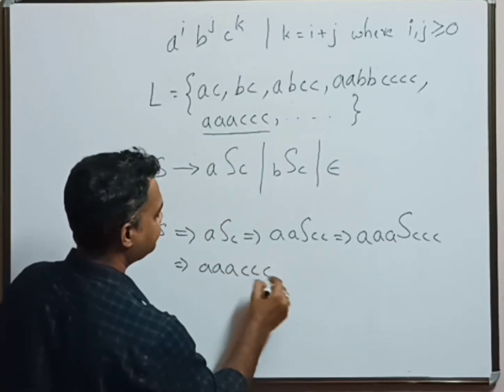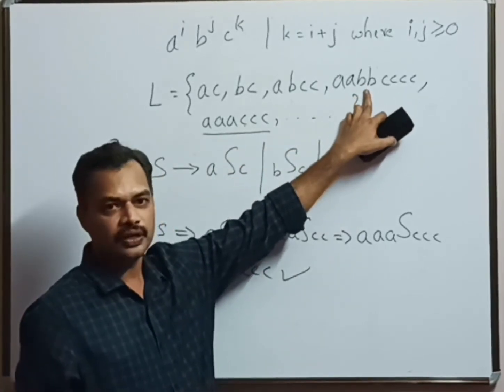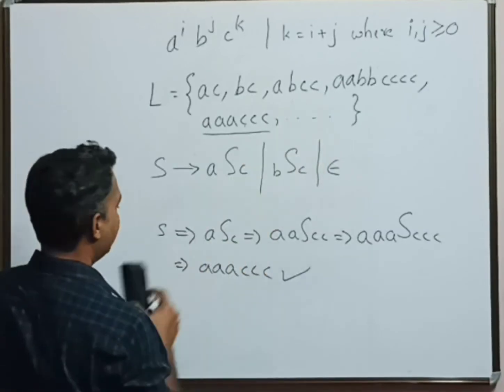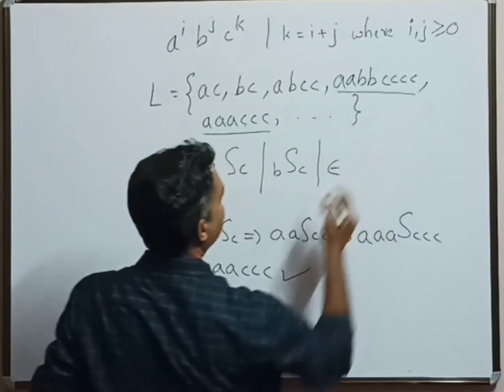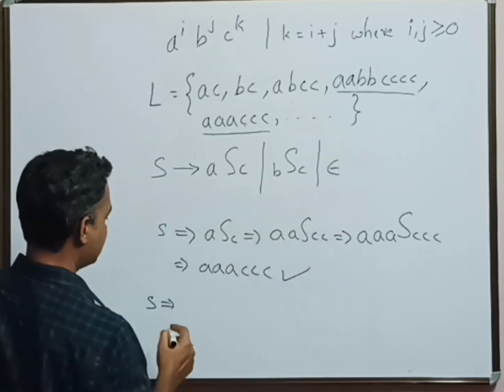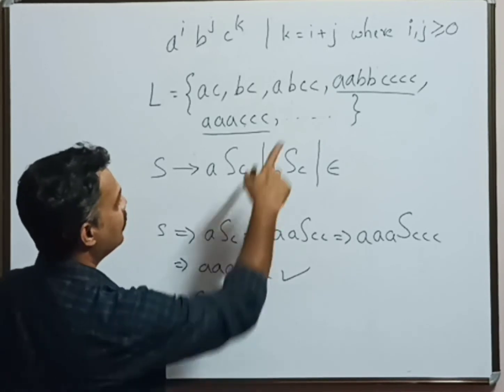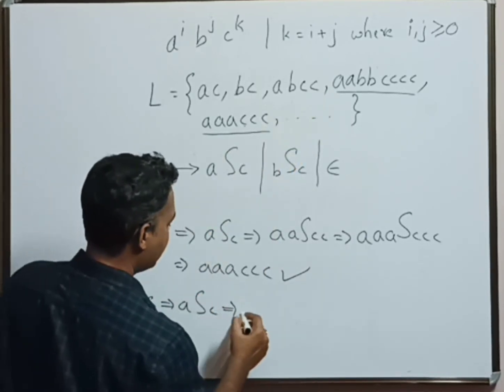Similarly we can take one more string which is a mixture of all these letters: aabbcccc. Since it starts with a, let us apply the first rule: aSc. Once again there is one more a, we can have one more application of the first rule: aaScc.